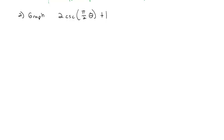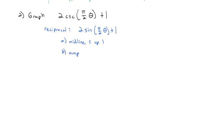Cosecant is the reciprocal of sine, so we'll graph the reciprocal of sine of (π/2)θ + 1. The midline goes up 1 because of the +1. The amplitude is 2 because of the 2 in front. The period is 2π divided by π/2 — multiplying top and bottom by 2, the π's cancel, giving us a period of 4.